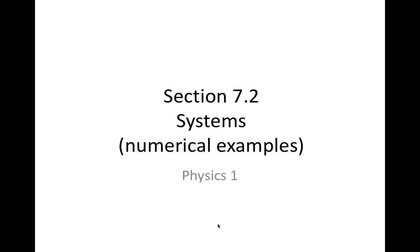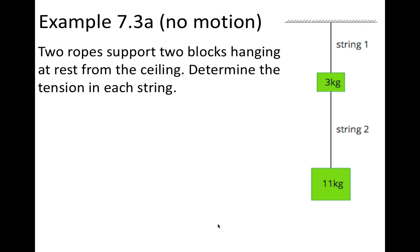In section 7.2, I'm going to discuss systems with some numerical examples. In this first example, we have two ropes that support two blocks hanging at rest from the ceiling, and we are to determine the tension in each string. We'll start out by drawing a free body diagram showing the forces acting on each block. I'm going to color code it — red arrows indicate external forces and blue arrows indicate internal forces to the system. We'll start out by considering both blocks to be our system.